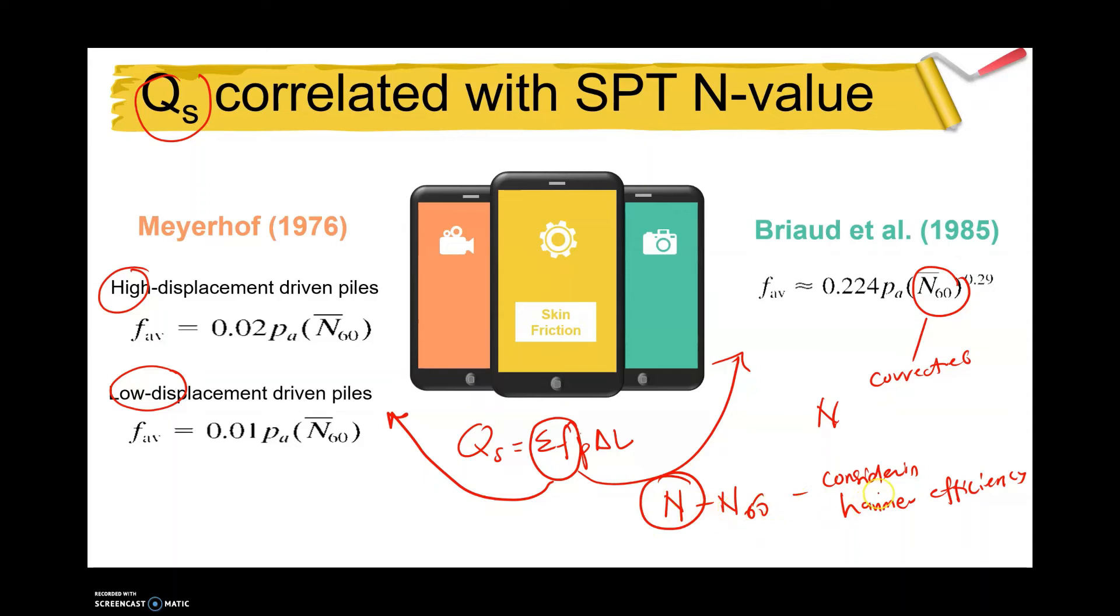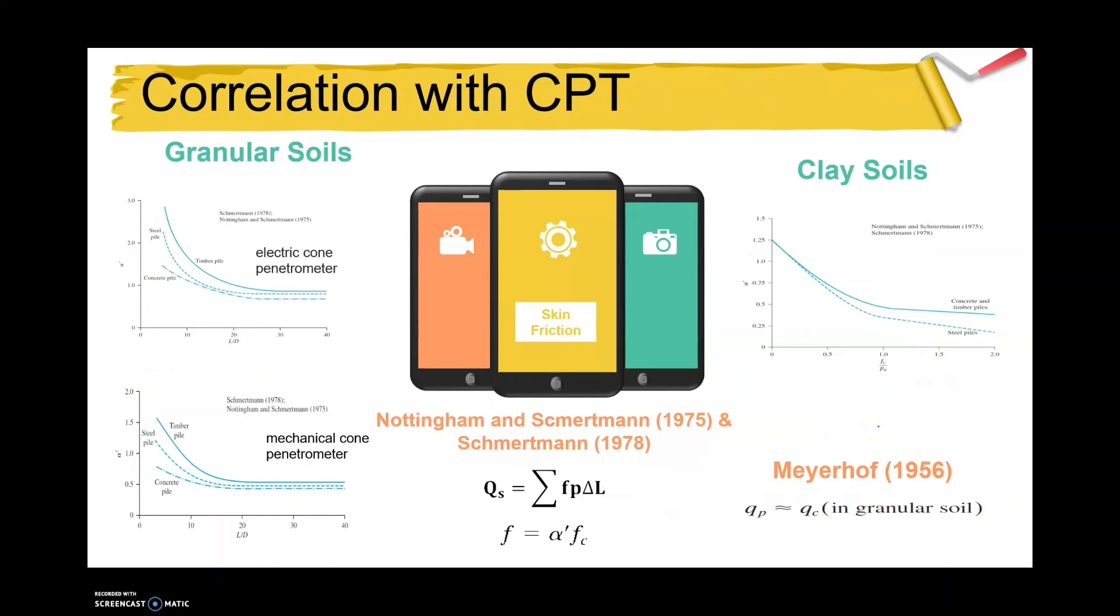This is the correlation with CPT. We divide by two: granular and also clay, based on these equations.